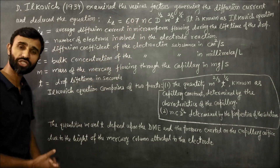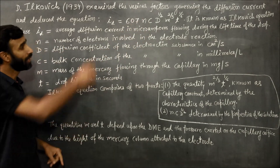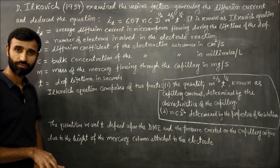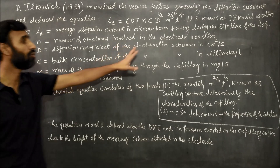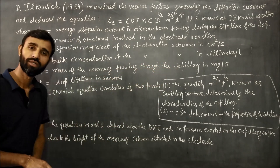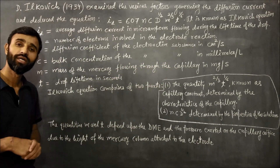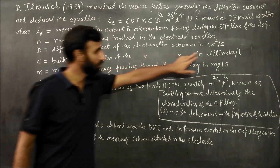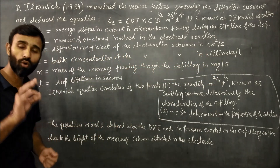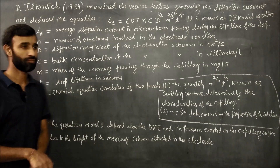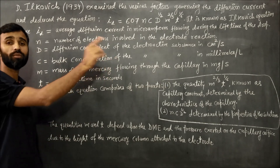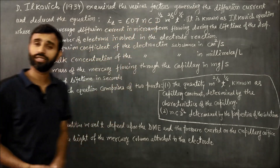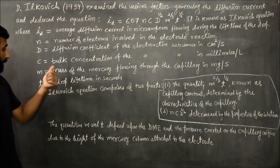n is the number of electrons exchanged in the electrode reaction. c is the bulk concentration of the electroactive substance — meaning the substance which undergoes oxidation or reduction — and it is in millimoles per liter, or equivalently moles per centimeter cubed.